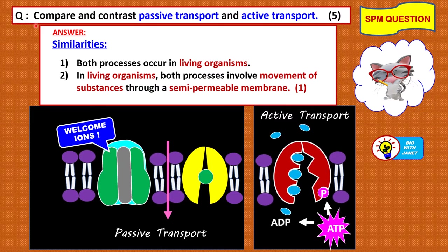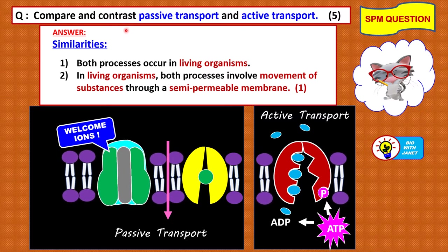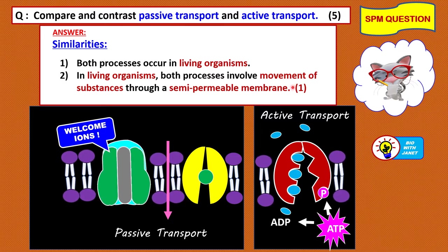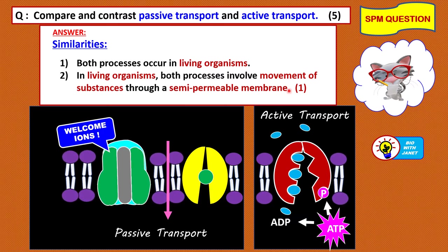Let's look at an SPM question: compare and contrast passive transport and active transport, five marks. 'Compare and contrast' means we must give both similarities and differences. At least one similarity: both processes occur in living organisms, and both involve movement of substances through a semi-permeable membrane — the plasma membrane found on the external part of the cell — either into or out of the cell.